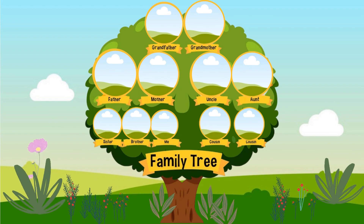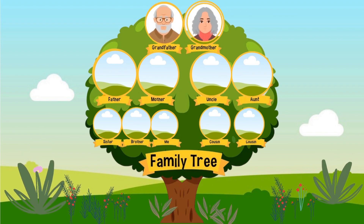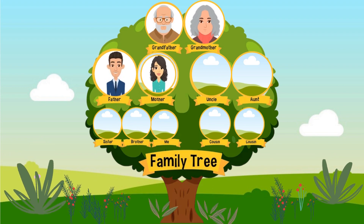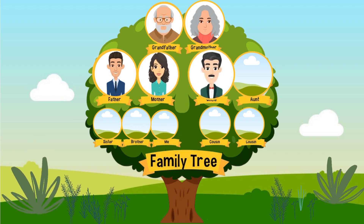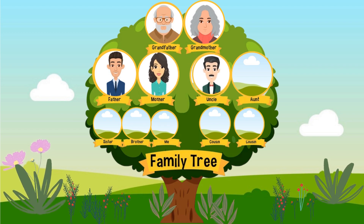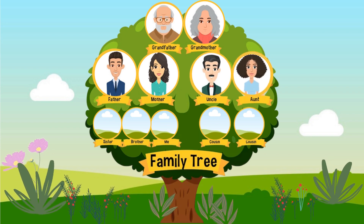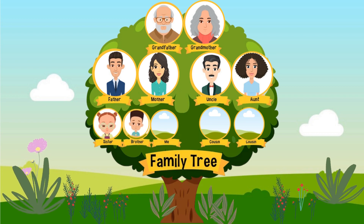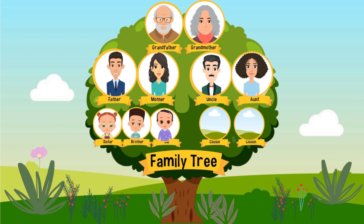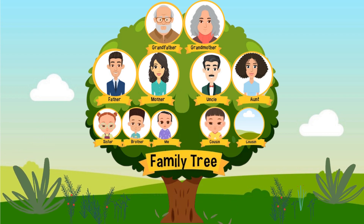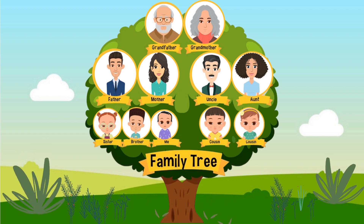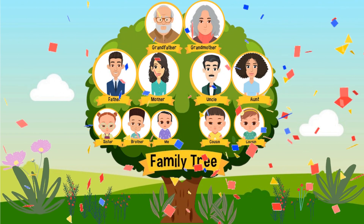It's a family tree. Here: Grandfather, Grandmother, Father, Mother, Uncle, Aunt, Sister, Brother, Baby, Cousin Brother, and Cousin Sister. This is a family tree. They are all the relations.